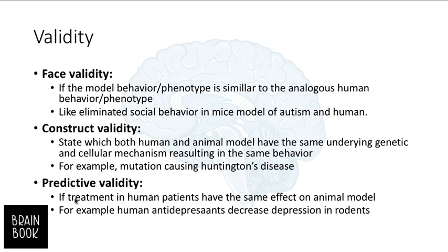The third component is predictive validity. This means that a treatment effective in human patients has the same effect on the animal model. For instance, when we use antidepressant drugs that are specific to humans and apply them to rodents, we can see that they produce decreased depression. These treatments have the same result in both species, and this is called predictive validity.